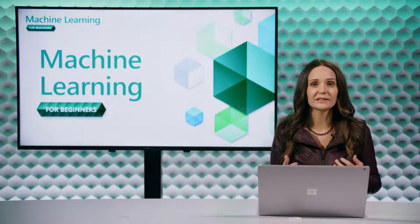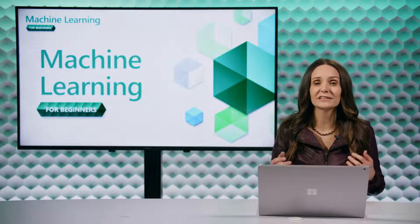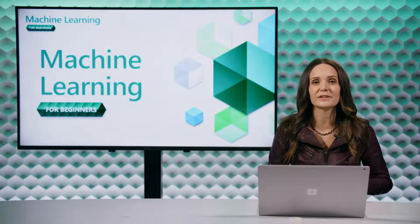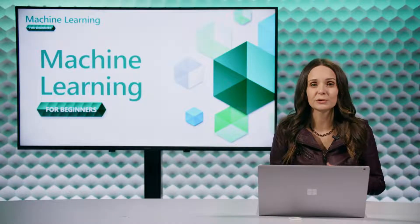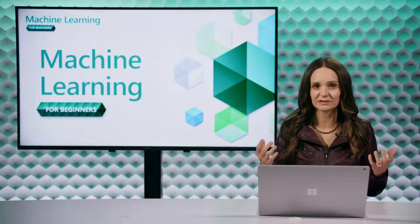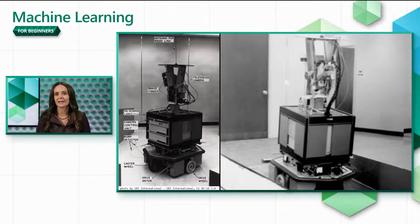Research was well-funded by government agencies, advances were made in computation and algorithms, and prototypes of intelligent machines were built. Some of these machines include Shakey the Robot, who could maneuver and decide how to perform tasks intelligently.